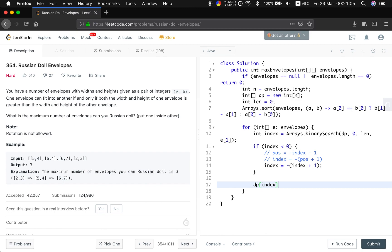So then we update the DP[index] into the E[1], which is the height. And if the index is equal to the length, which means we should append that at the end. So we should update the length, increase by 1. Finally, we just return this length.